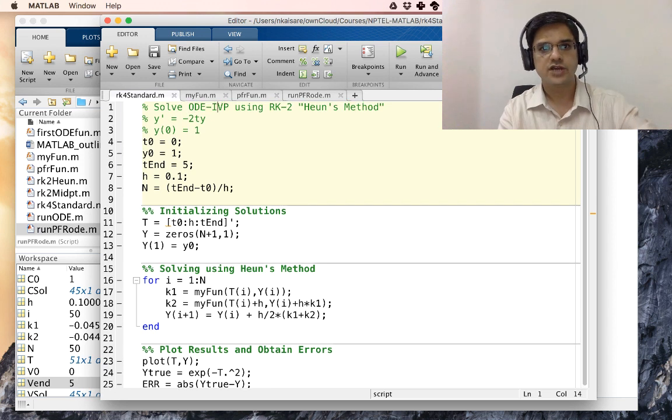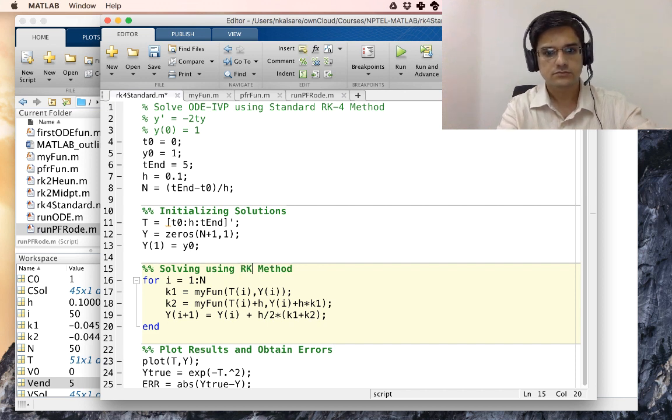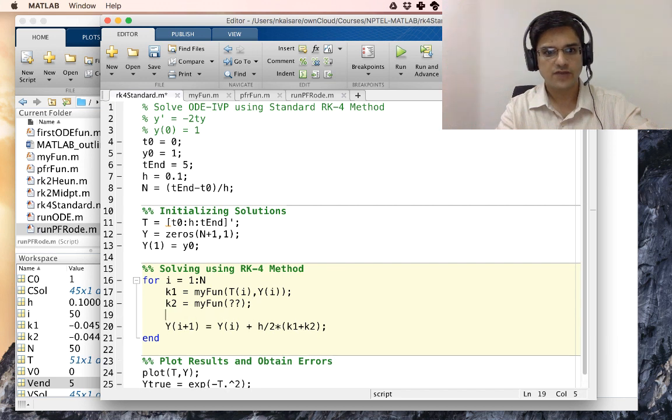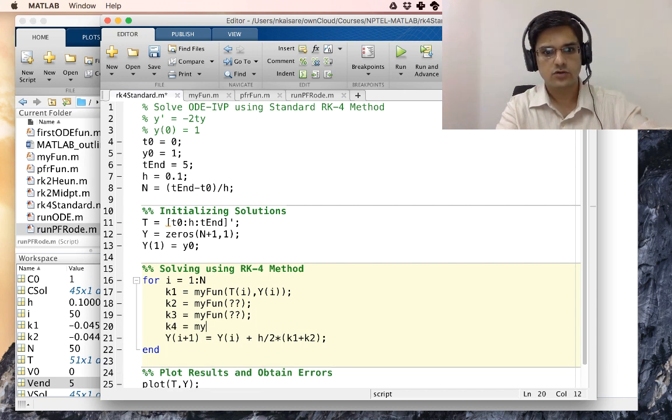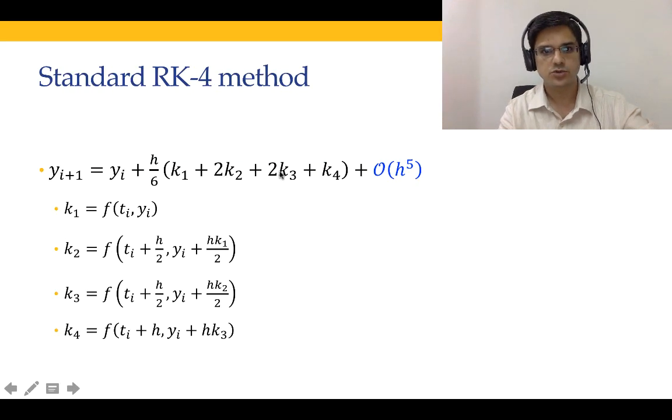RK4 method, solve ODEIVP using standard RK4 method. The initialization parts remain the same, the problem definition remains the same. Solving using RK4 method: K1 equal to this, K2 equal to MYFUN of something, K3 equal to MYFUN of something, K4 equal to MYFUN of something, and YI plus 1 equal to YI plus H by 6 multiplied by K1 plus 2K2 plus 2K3 plus K4.